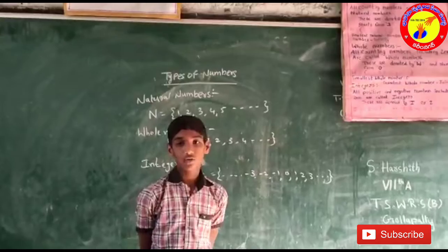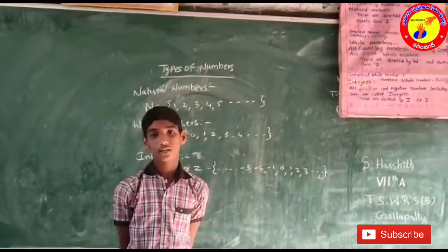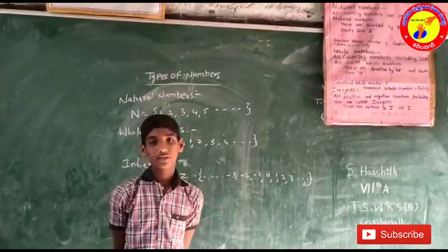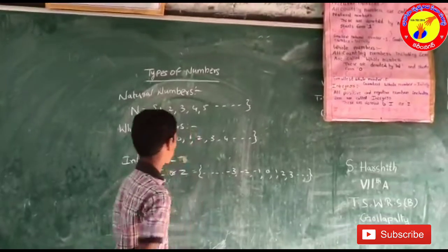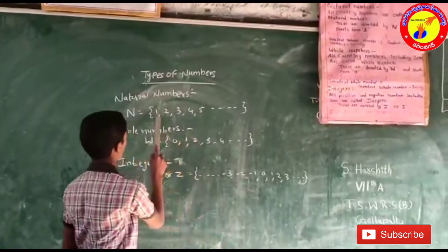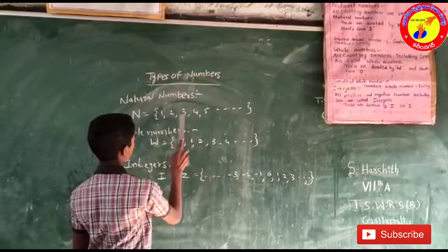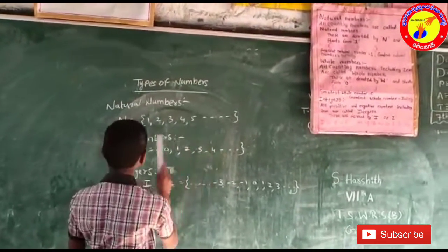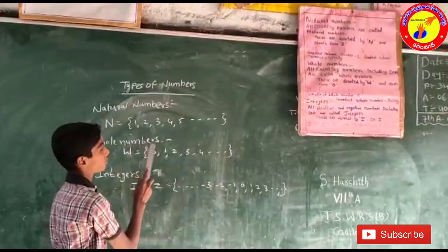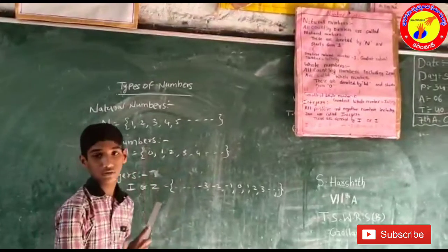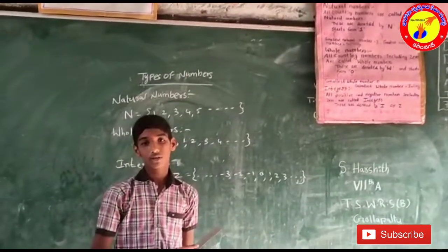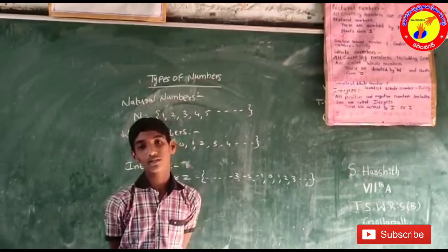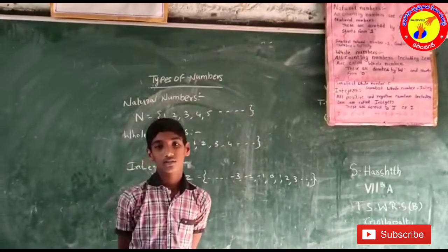All counting numbers are called natural numbers. These are denoted by N and start from 1. For example, 1, 2, 3, 4, 5, and so on. The smallest natural number is 1 and the greatest natural number is infinity.